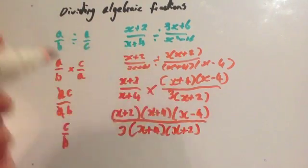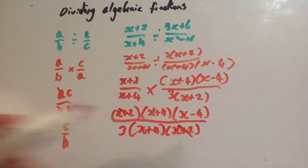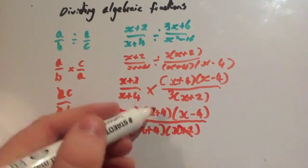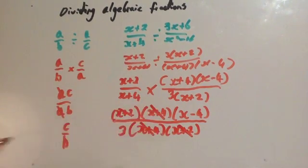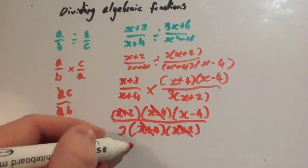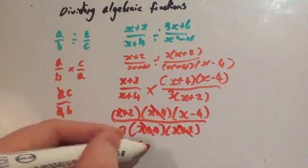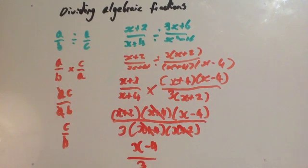And then see if anything cancels: the X plus 2 cancels with the X plus 2, the X plus 4 cancels with the X plus 4, so we're left with X minus 4 over 3. And that's it.